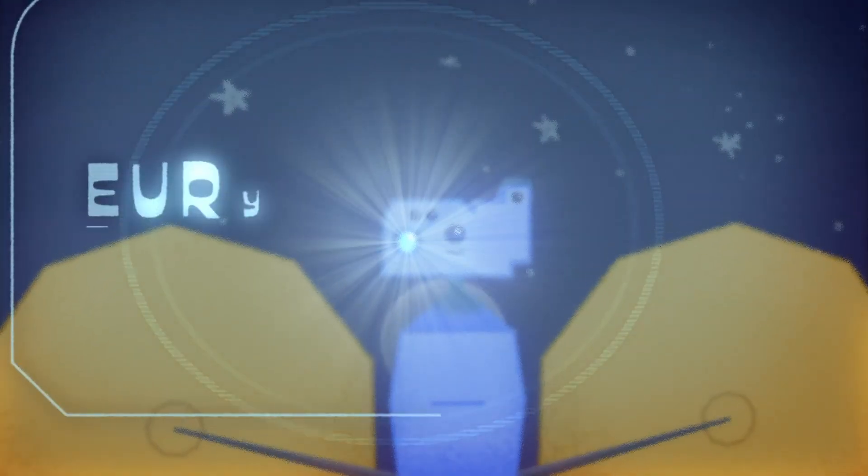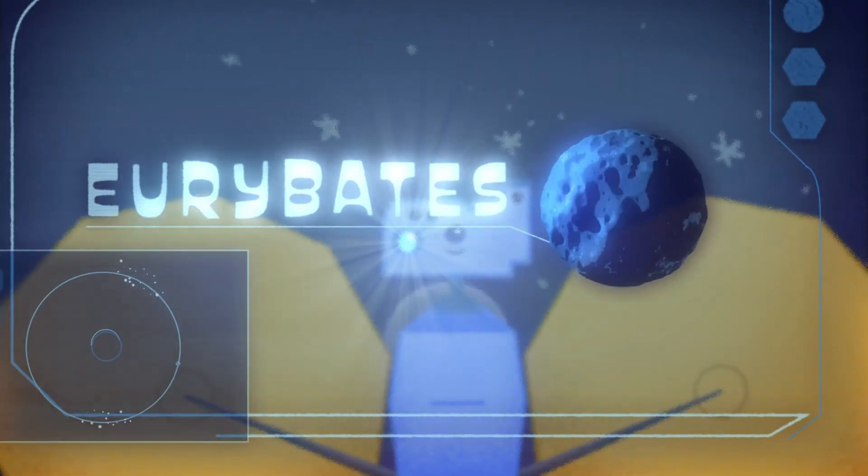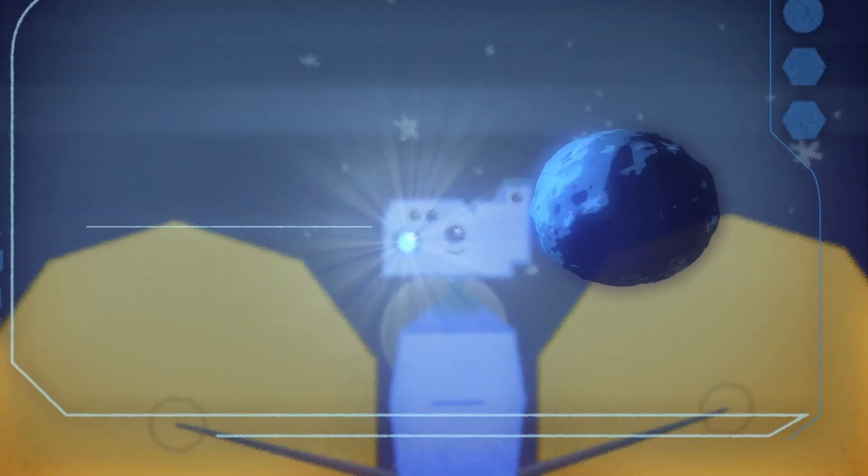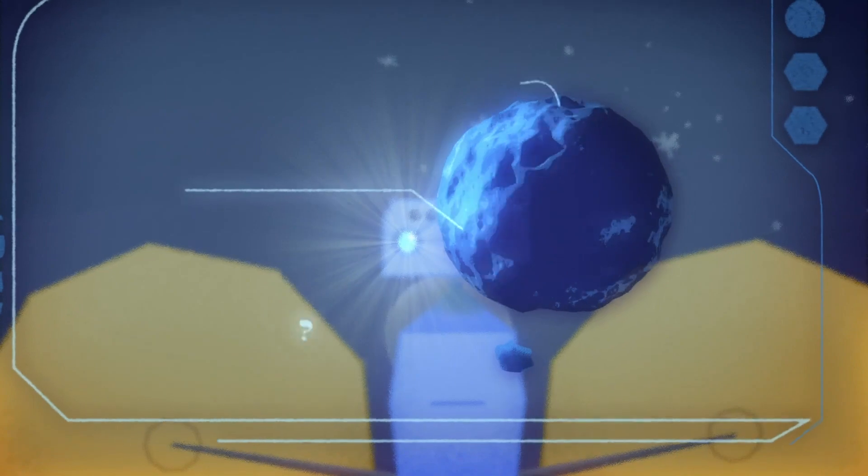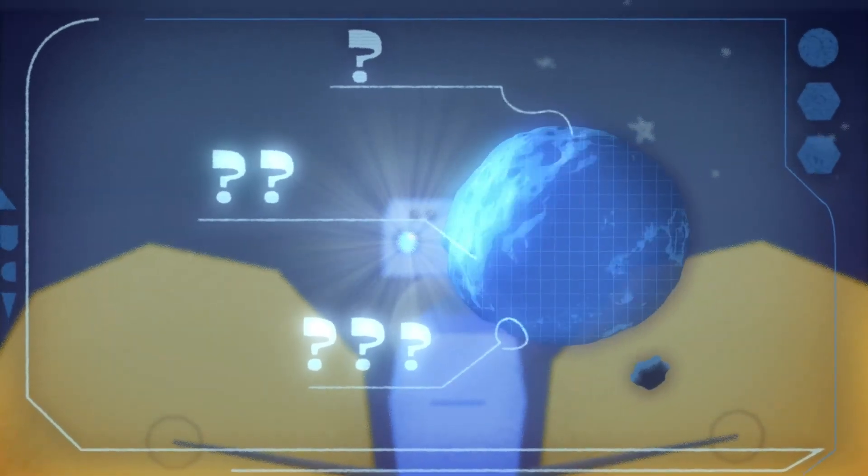The main goal of the Lucy mission is to explore the Trojan asteroids. We want to understand where these asteroids came from and why they're so diverse. This is going to be our first ever exploration of these objects.